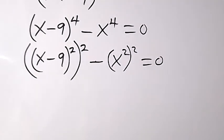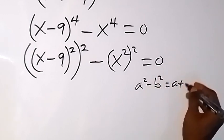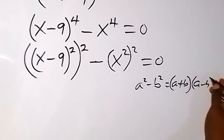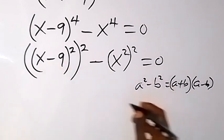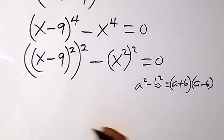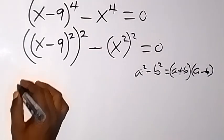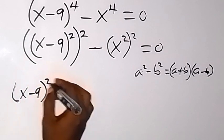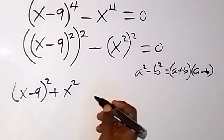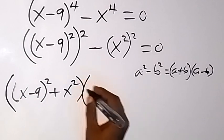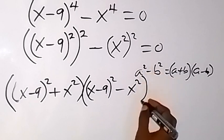Now the application of difference of two squares comes in. When we have a squared minus b squared, this gives us (a plus b) multiplied by (a minus b). So we apply the difference of two squares here. Our a is standing as (x minus 9) squared, and b is standing as x squared. So we now have a, which is (x minus 9) squared, plus b, which is x squared.